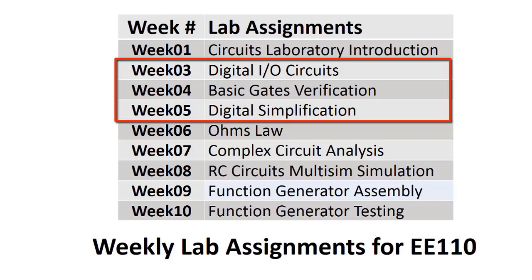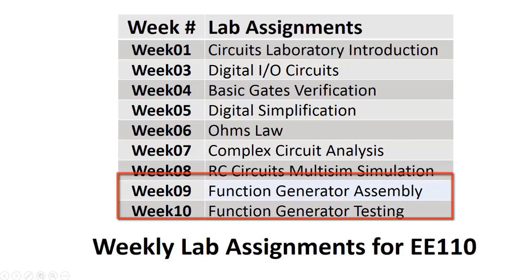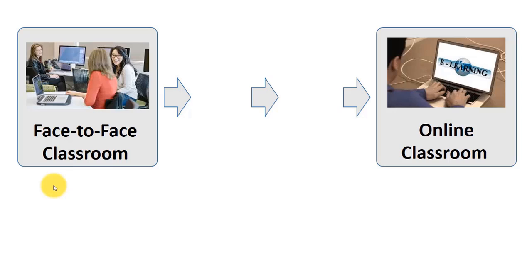Here is our weekly list of lab assignments for this course. We start off with ones and zeros involving digital circuits, then transition to analog circuits learning about Ohm's law. The last couple of weeks, students learn how to solder, assemble, and test a function generator. Since our students are adult or non-traditional students who work all day, we took the face-to-face classroom and leveraged technology to translate our teaching to one suitable for the online classroom.